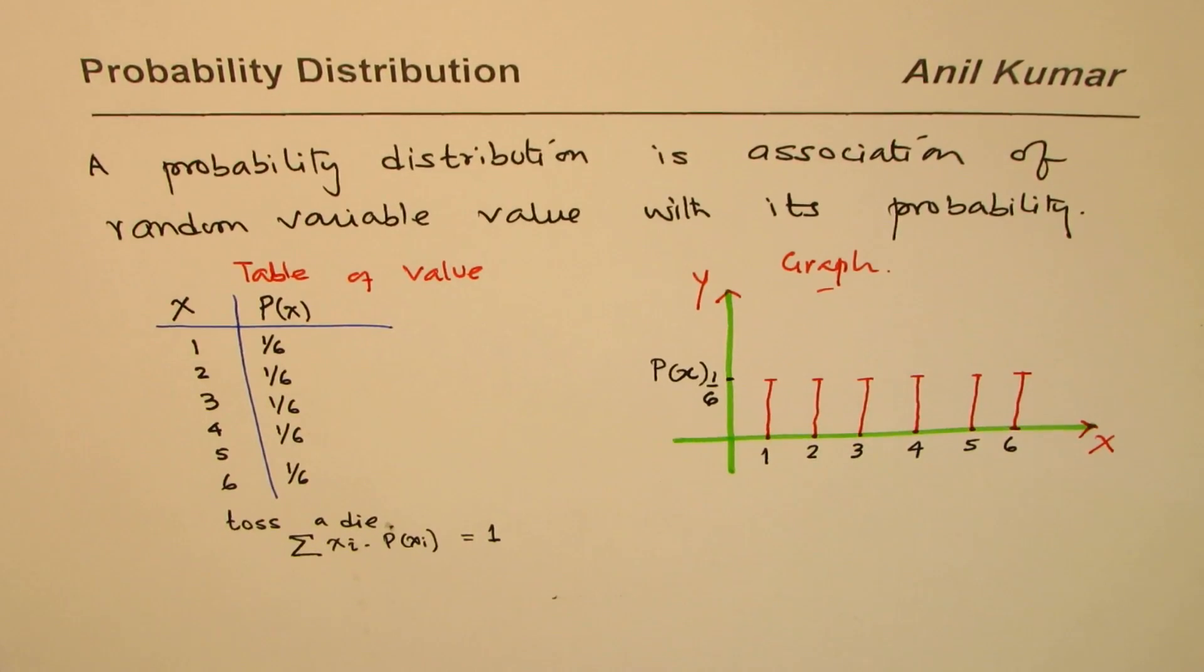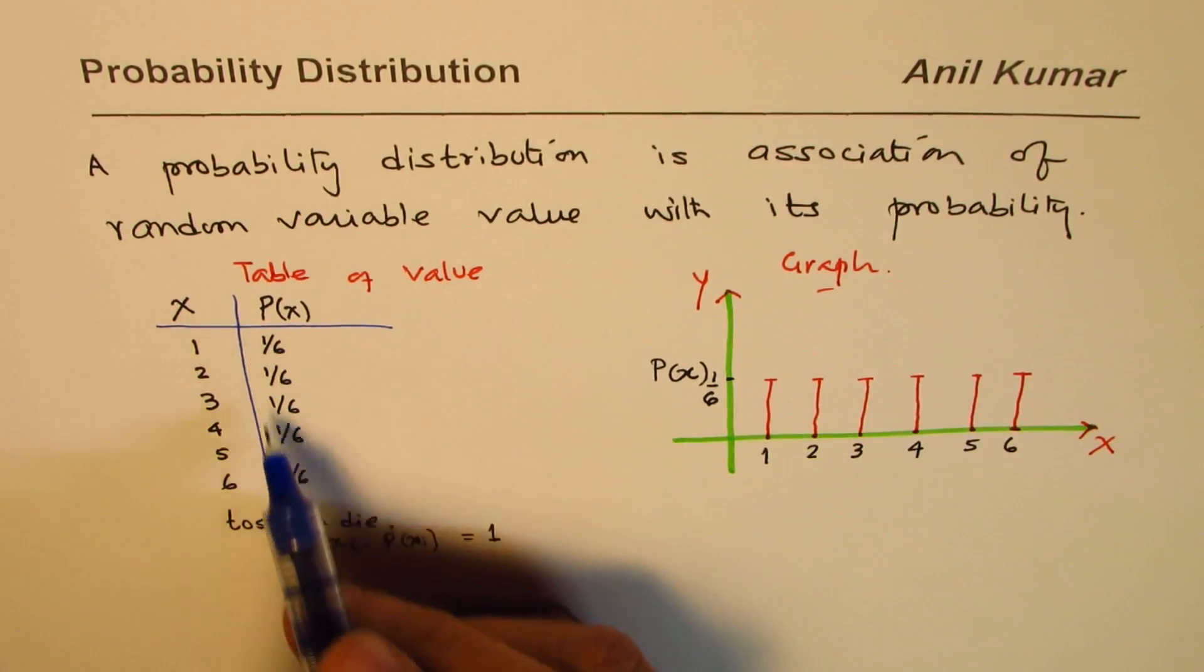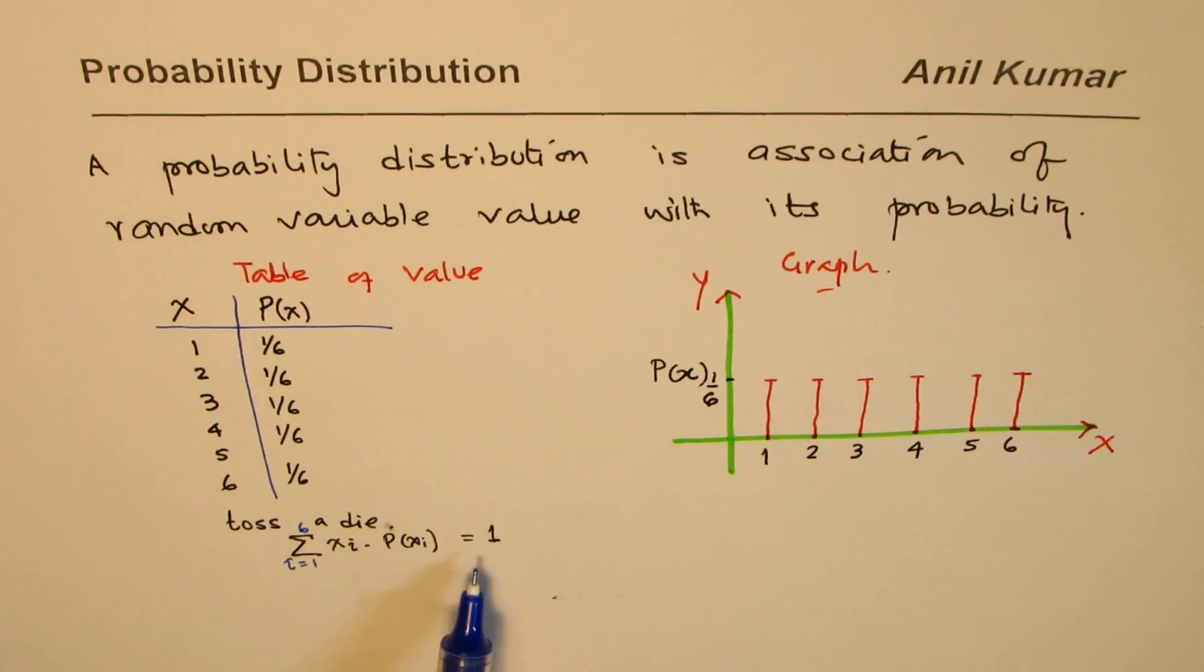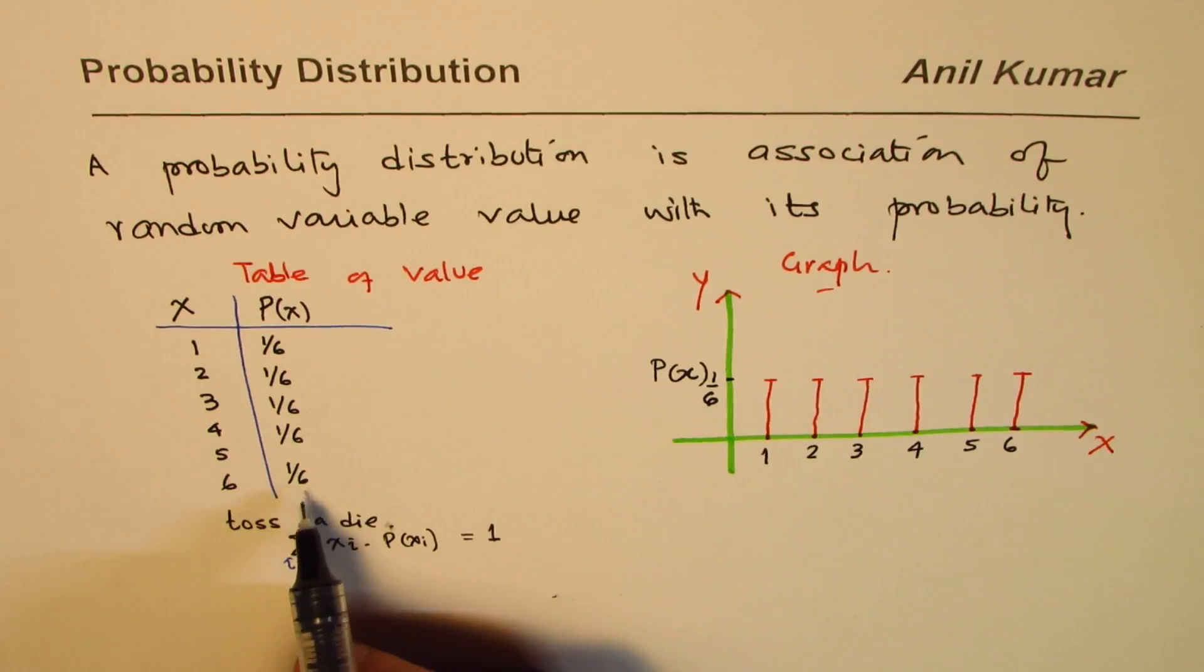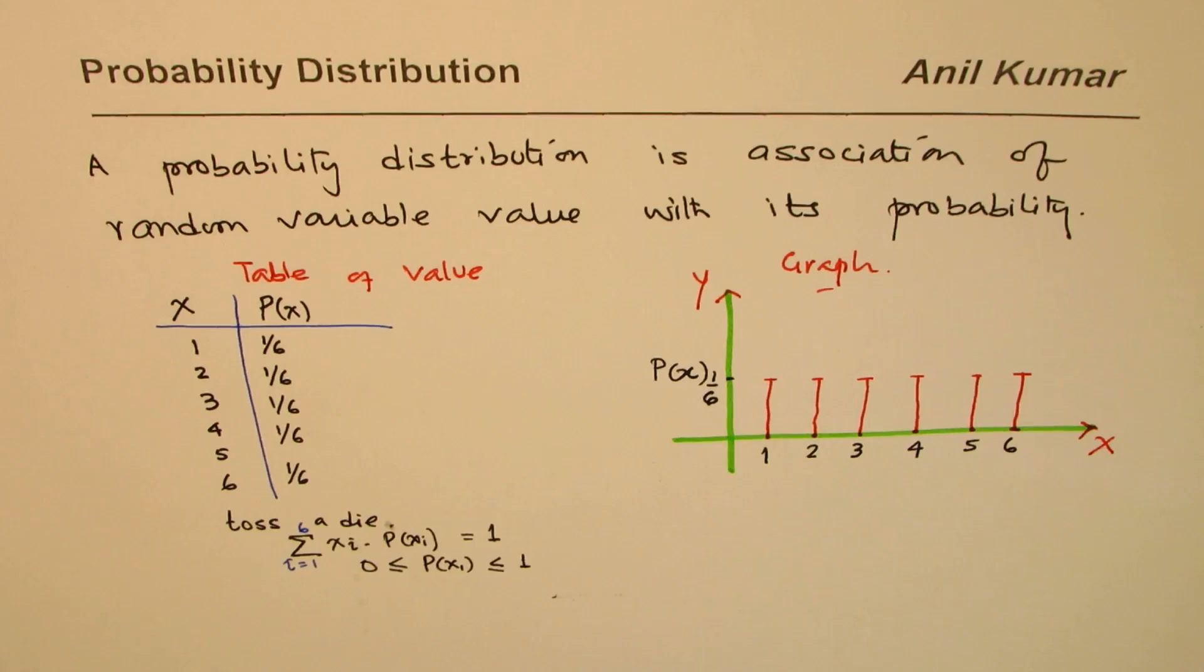In our case, i is from 1 to 6. If you add them up, this is always true. Another thing important to note here is that probability is always between 0 and 1, as it should be.